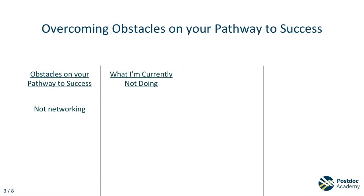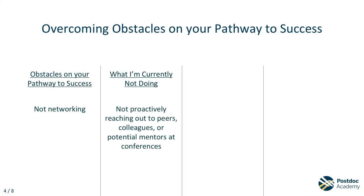Now we want to start thinking about what I'm currently not doing. For the example of not networking, an example could be that I'm not proactively reaching out to peers, colleagues, or potential mentors at conferences. Pick a few of these obstacles that you can realistically build upon in the next few days, and list what you're not doing yet in the second box.